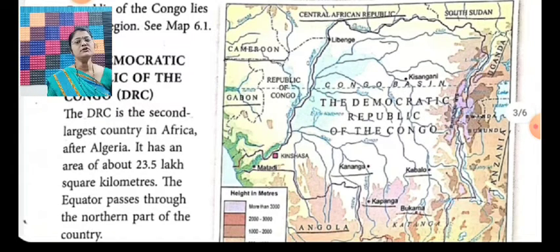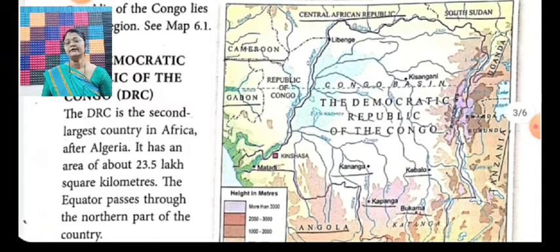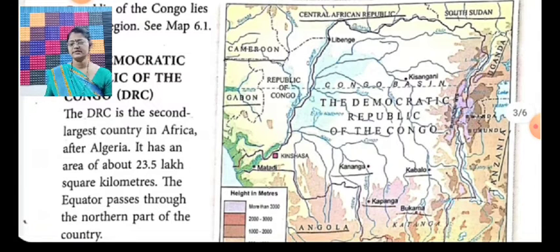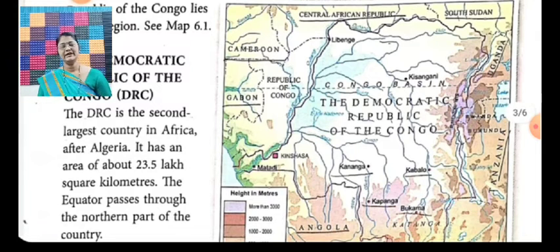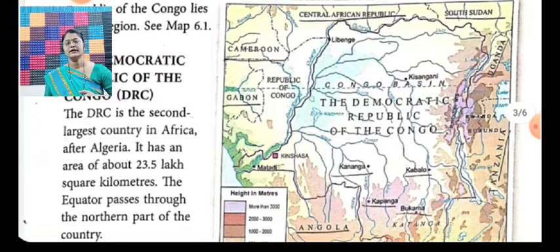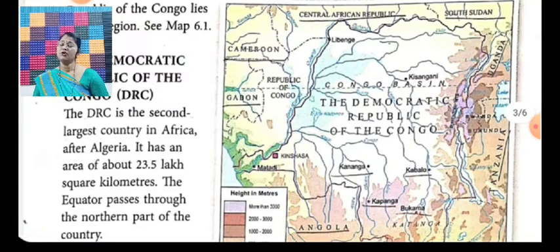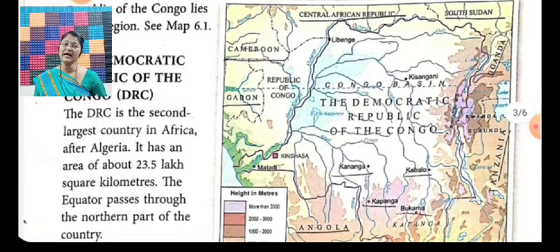The Democratic Republic of the Congo — we call it DRC — lies in this equatorial region. Isi equatorial region mein DRC lie karta hai, jo region Tropic of Capricorn aur Tropic of Cancer ke beech mein hai.